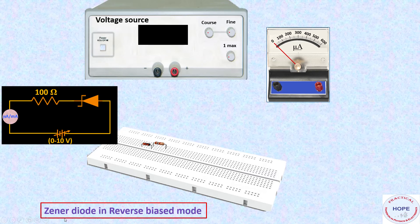Next is to study Zener diode in reverse bias mode. Now here we need an extra resistor of 100 ohm. So this is the circuit. We have a power supply, micrometer or milliammeter, 100 ohm resistor, and a Zener diode in reverse bias mode.